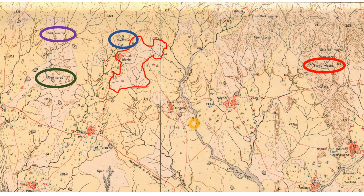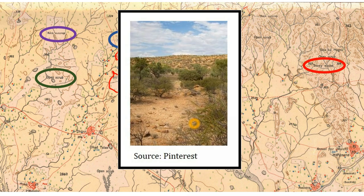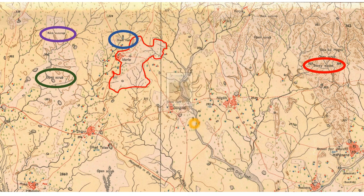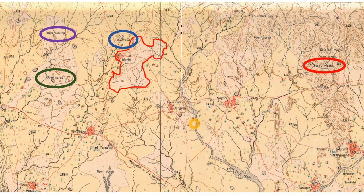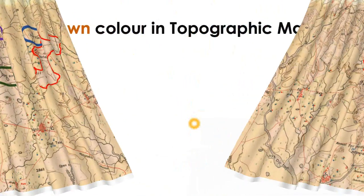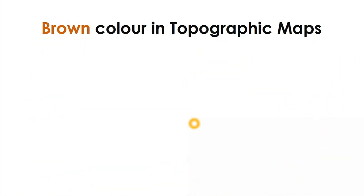Open scrub can be seen in many parts of the map. This kind of area, having only shrubs and bushes, is called open scrub and is also shown in the white colored area. By seeing white color we can easily understand that the area is not suitable for cultivation, whereas yellow color means areas which are suitable for cultivation. These are the features shown using white color.